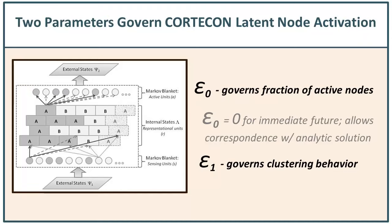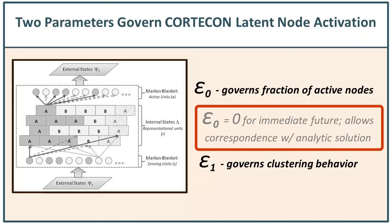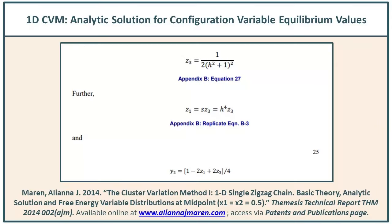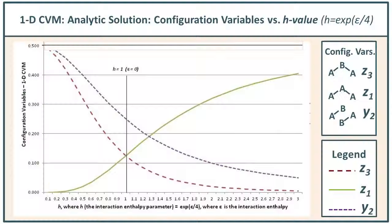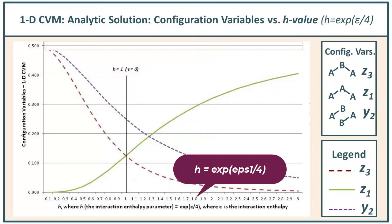This is unique to working with the corticons and specifically to the cluster variation method grid of neurons within a corticon. We can bring the model to equilibrium subject to changing just two parameters: the interaction enthalpy and the activation enthalpy. The activation enthalpy is epsilon zero — we keep this set to zero, ensuring equal numbers of nodes in state A and state B, which lets us apply an analytic solution. We also have the interaction enthalpy parameter epsilon 1, which we often refer to as the h value, defined as the exponent of epsilon 1 divided by 4.